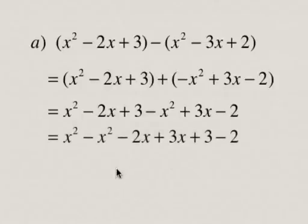So we collect those, and we end up with x squared minus x squared is 0, negative 2x plus 3x is x, and 3 minus 2 is 1. So this simplifies to x plus 1.